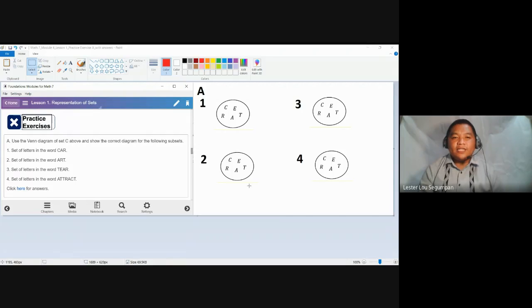Set of letters in the word car is definitely a subset of set C containing the letters in the word create, C-R-E-A-T. Because in that set, set C, which contains again the elements C-R-E-A-T, has the elements, has letters C-A-R for the set of the letters in the word car.